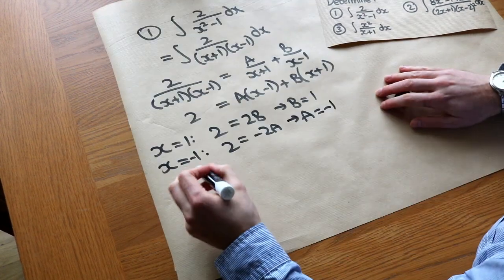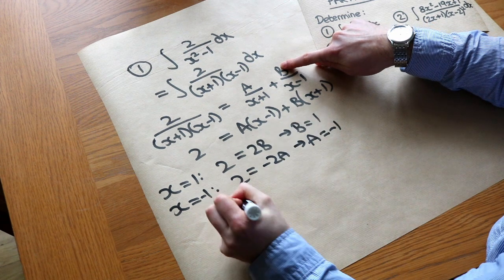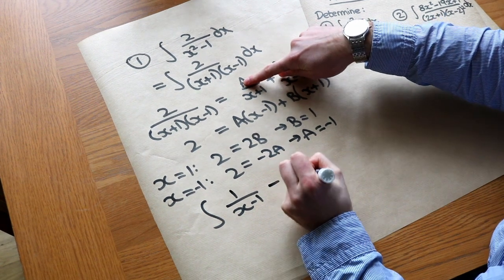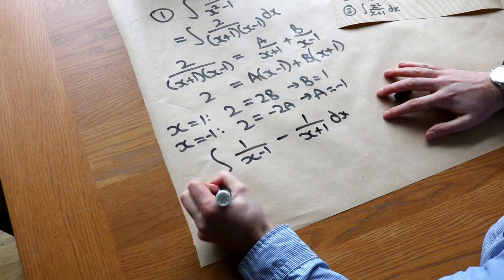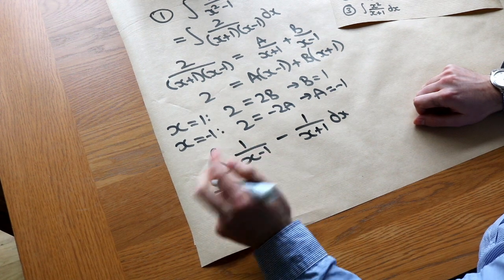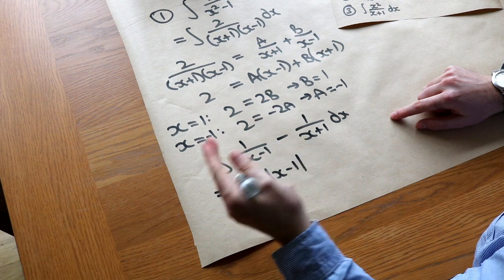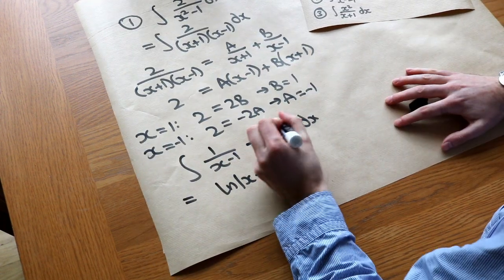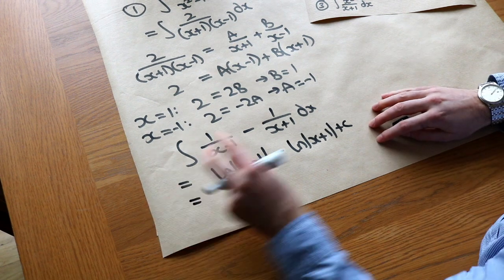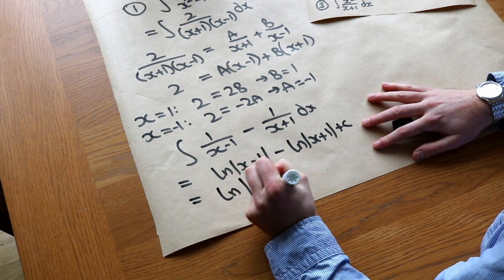Now I can turn this integration into the integral of the partial fractions instead. Putting the positive term first, we've got the integral of 1/(x-1) minus 1/(x+1). Integrating 1/(x-1) gives ln|x-1|, and then minus ln|x+1|, plus C. If we wanted to, we can use laws of logs to combine that into a single log: ln|(x-1)/(x+1)| + C.